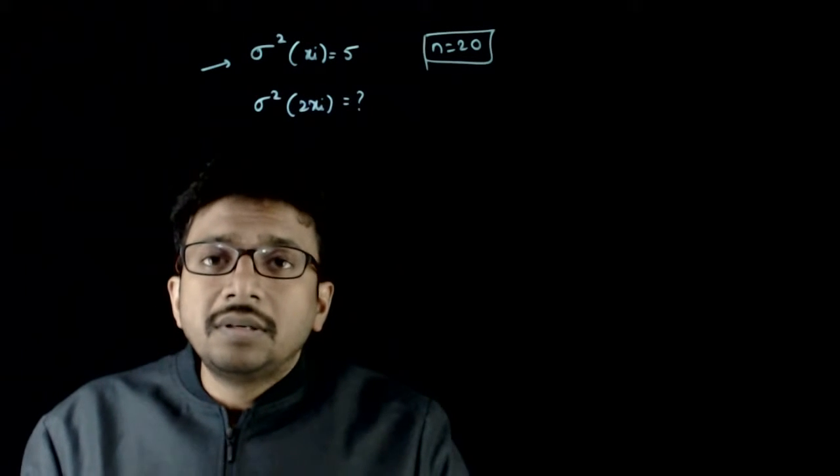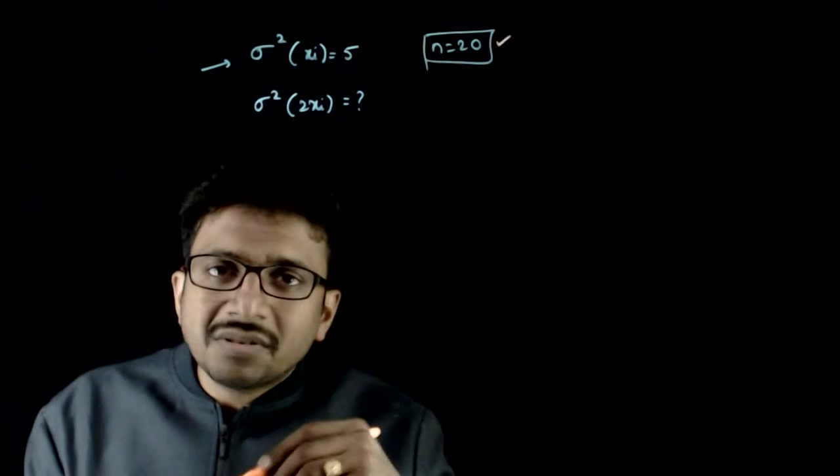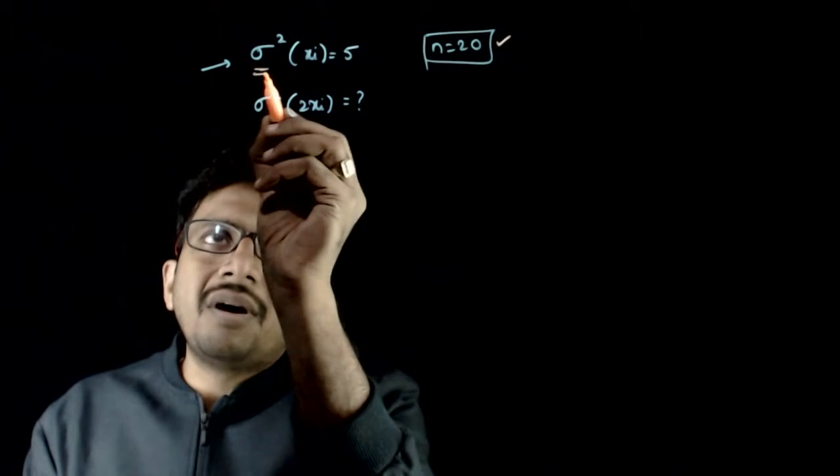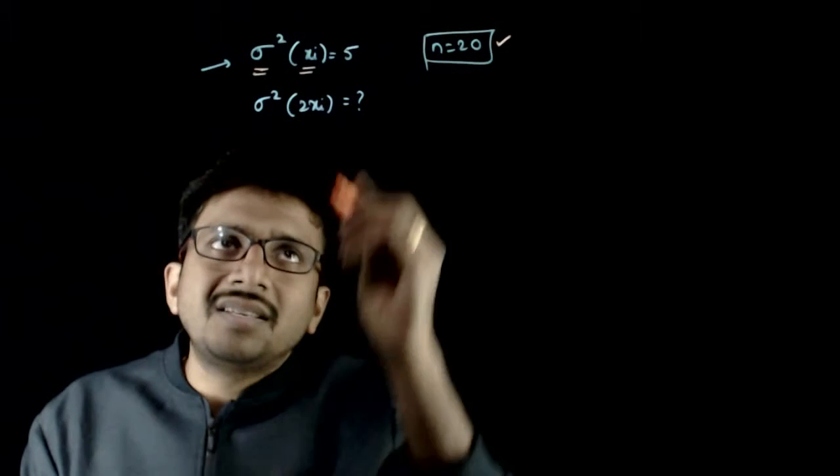Welcome students. In this question, you're given that you have 20 observations and the variance of these 20 observations, that is variance of xi's, is equal to 5.